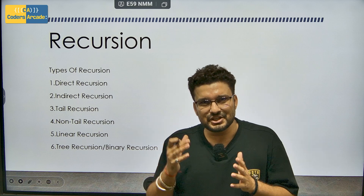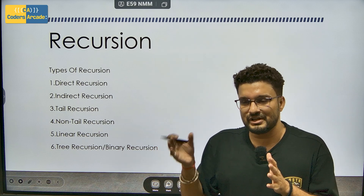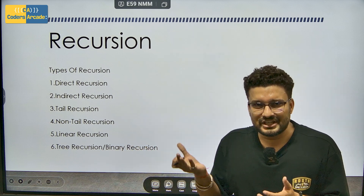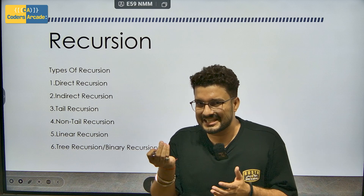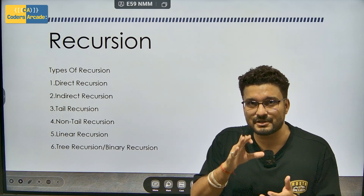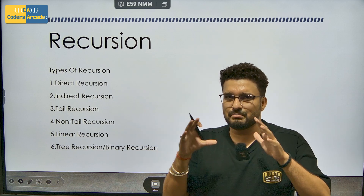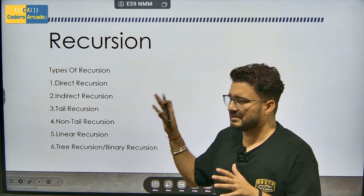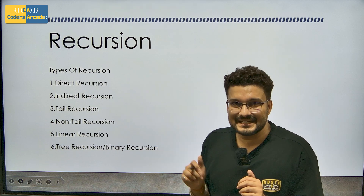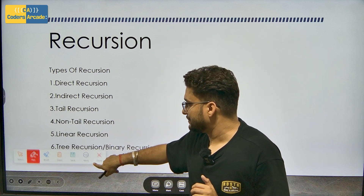Usually in interviews, after breaking the coding round when you sit for interviews, they will ask you about this — first, what is recursion, and then what are the types of recursion. At that point you have to explain these types. You don't need to explain in brief, but you can give a few examples. So we will start one by one: direct recursion, indirect, tail, non-tail, and so on.